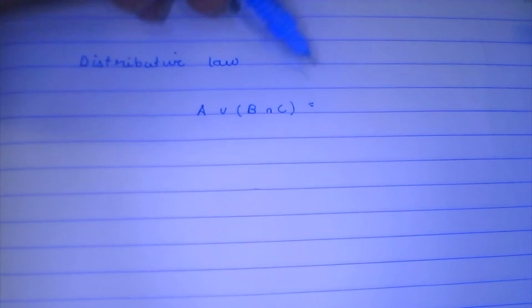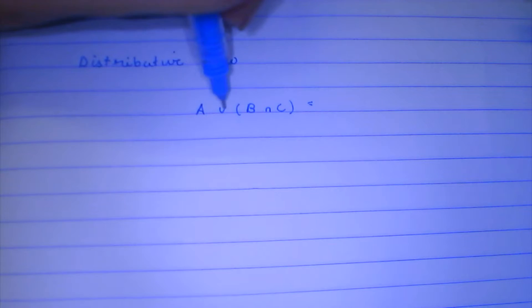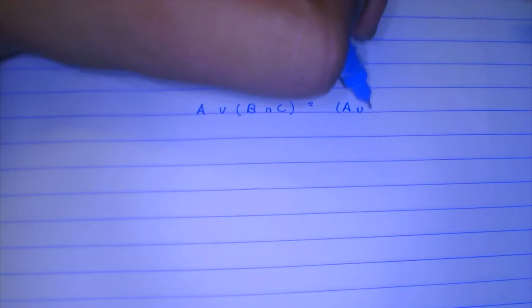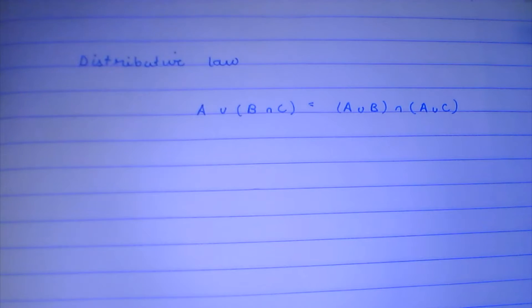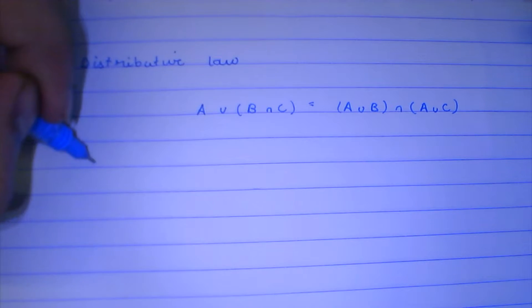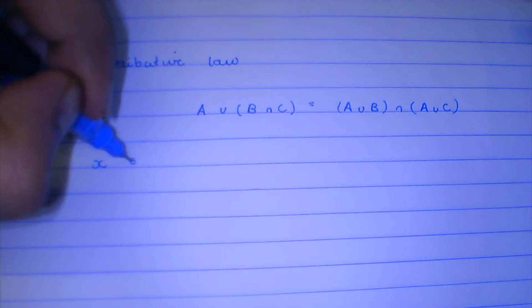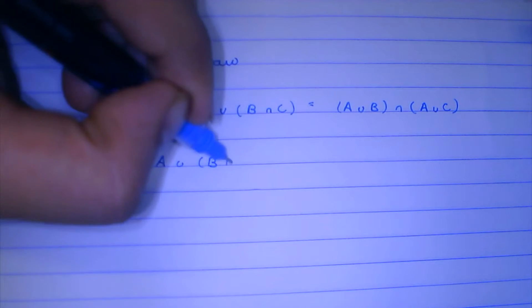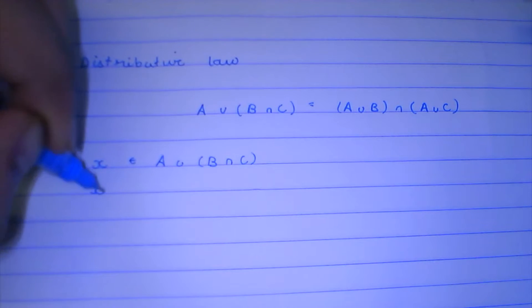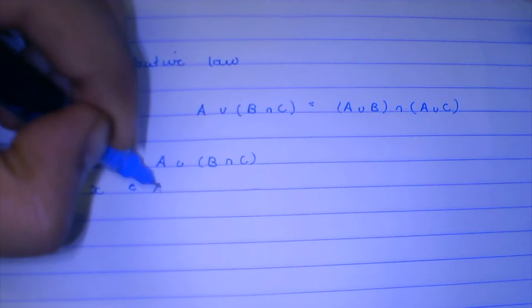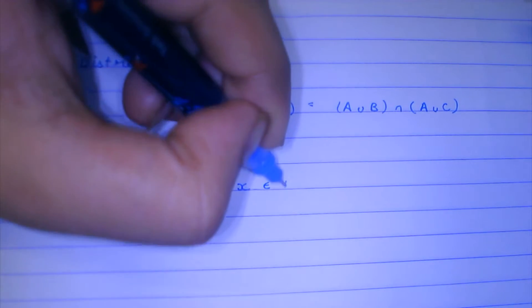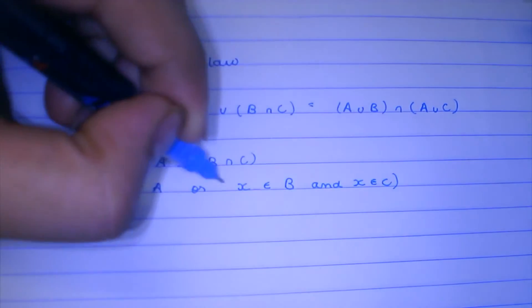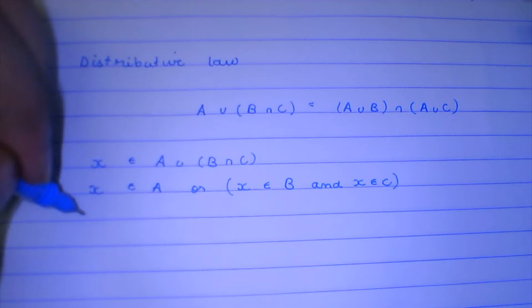First, let us see A union (B intersection C) is equal to (A union B) intersection (A union C). And we will prove it. Let X belongs to...